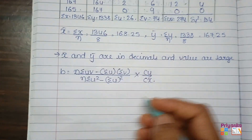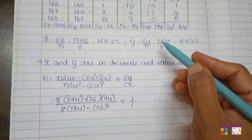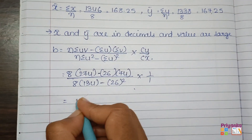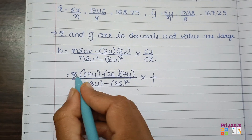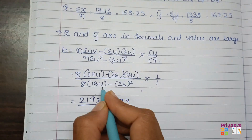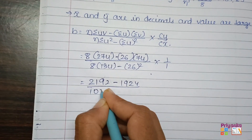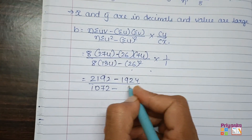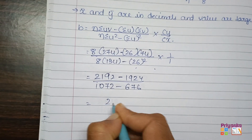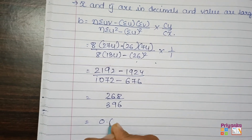Now substituting into the formula: n×sigma uv gives 8×274=2192, minus sigma u × sigma v which is 26×74=1924. The denominator: n×sigma u squared gives 8×134=1072, minus sigma u whole squared which is 26²=676. Subtracting gives B = 0.68.